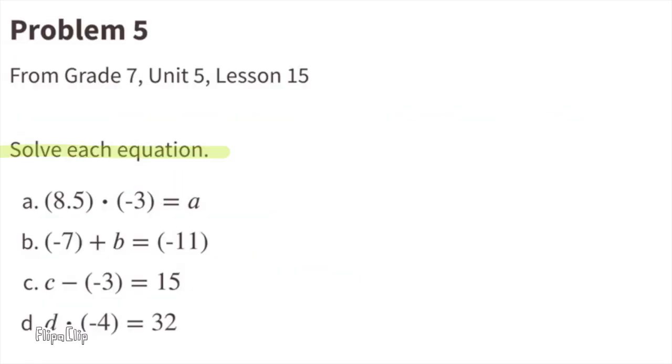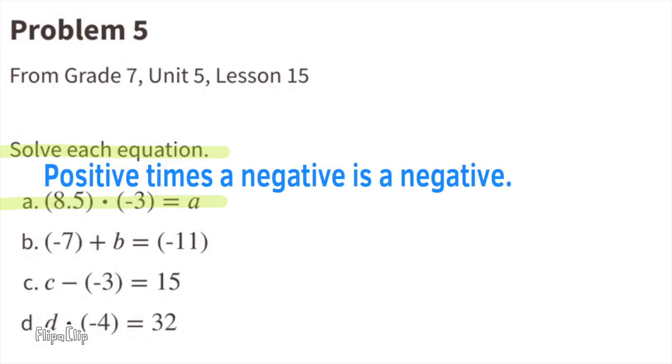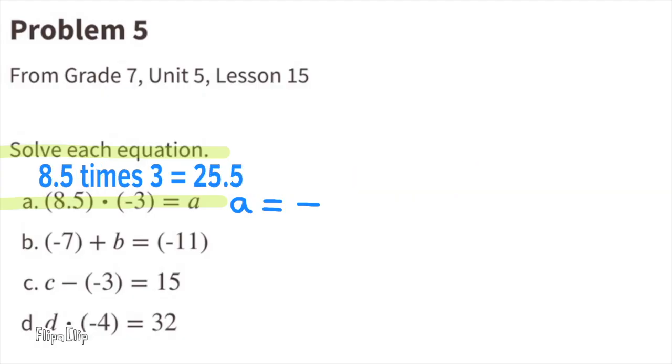Number five: solve each equation. A: 8 and 5 tenths times negative 3. Well, a positive times a negative is a negative. So 8 and 5 tenths times 3 is 25 and 5 tenths. So A equals negative 25 and 5 tenths.